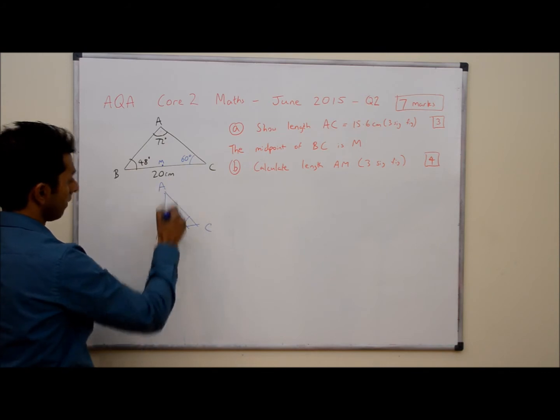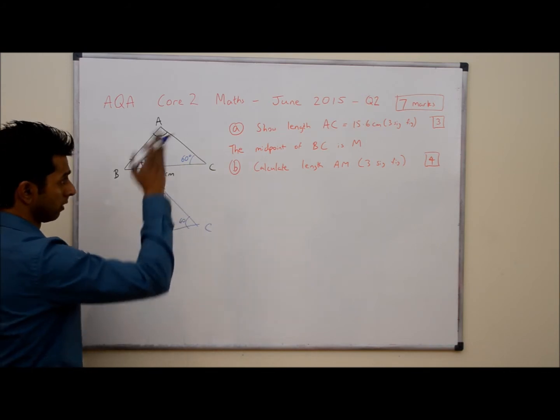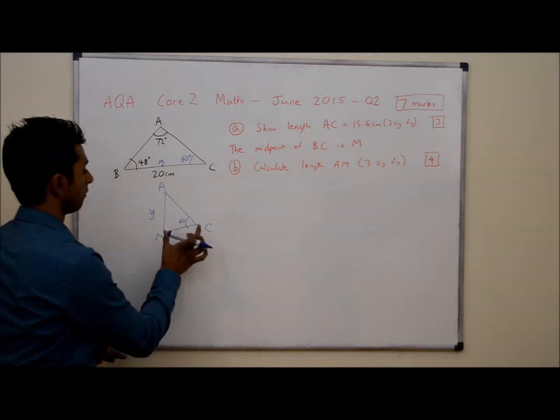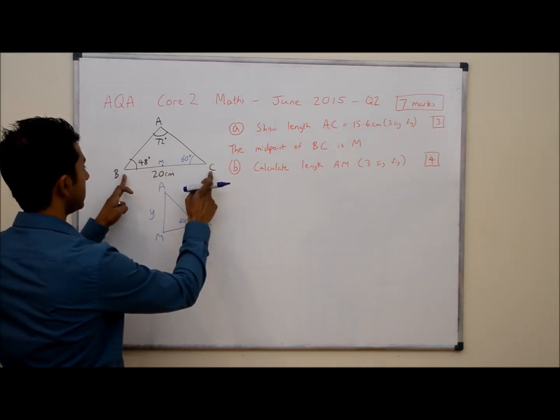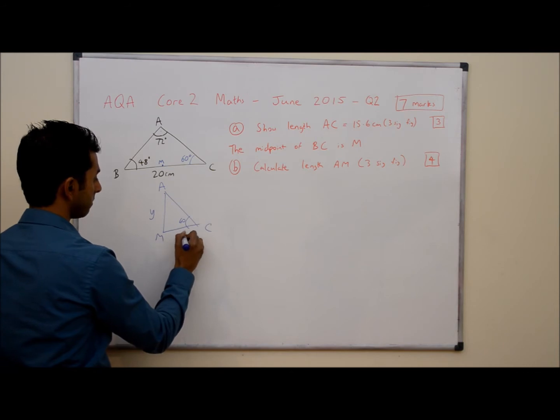We are trying to work out the length of A to M. So I'm going to call this length Y because we called the missing length in the first part of the question X. We also know the length of M to C because B to C was 20 and M is exactly in the middle. So this must be 10.